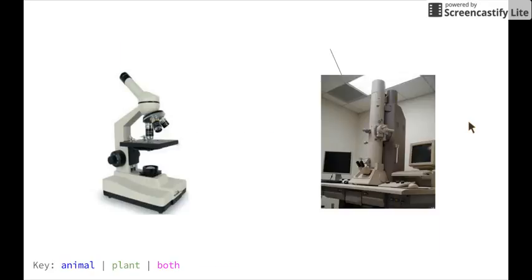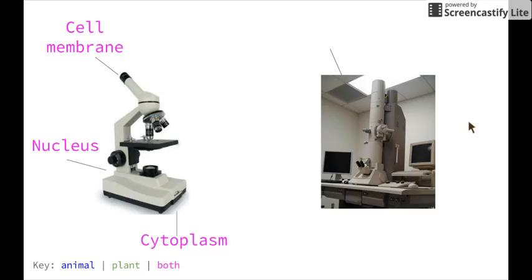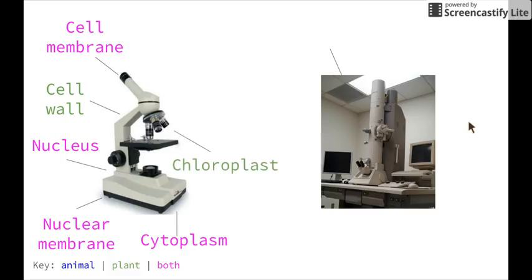We need to be able to identify organelles that can be viewed under each type of microscope. Starting off with the light microscope, we can see the cell membrane, nucleus, cytoplasm, nuclear membrane, the cell wall (which can only be seen in plant cells), chloroplasts (which again can only be seen in plant cells), and vacuoles.